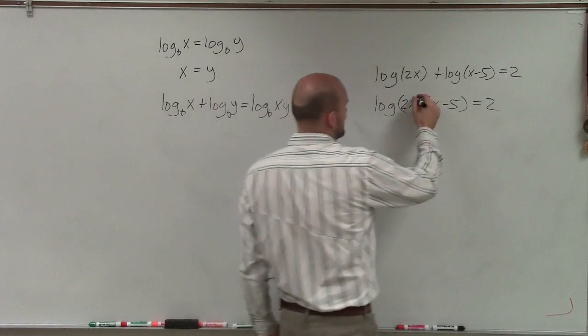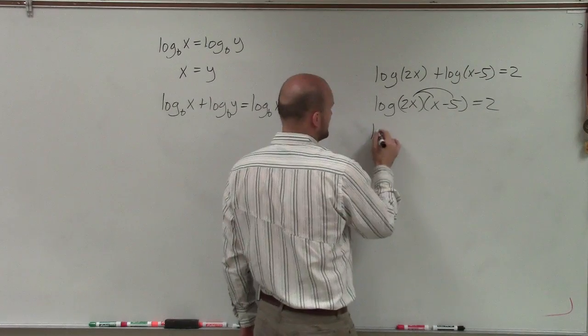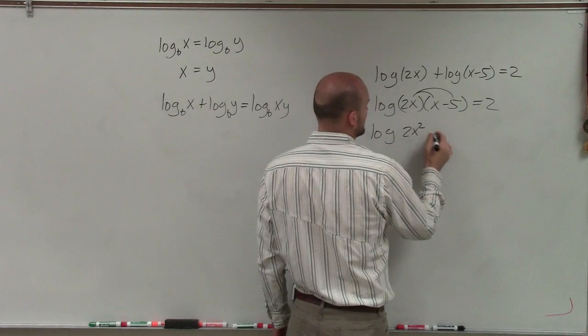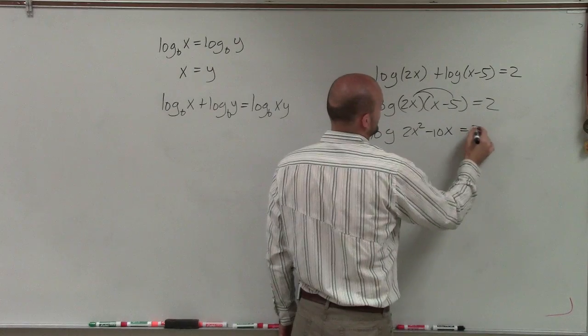So now, to multiply this out, I'm obviously going to have to apply a distributive property. So I have log of 2x squared minus 10x equals 2.